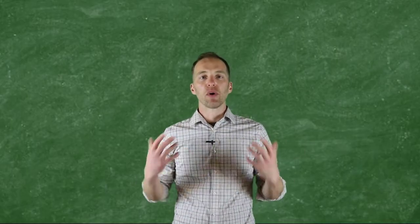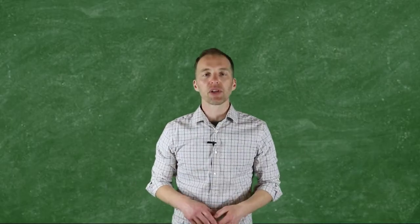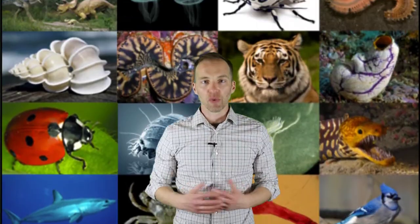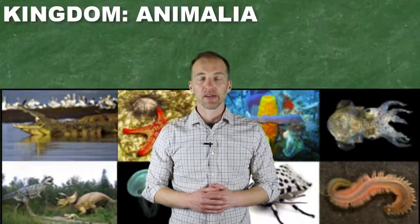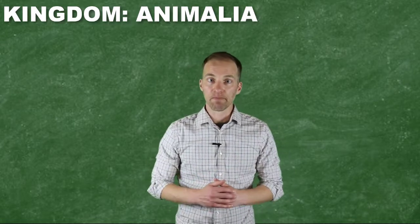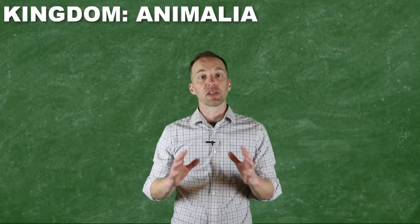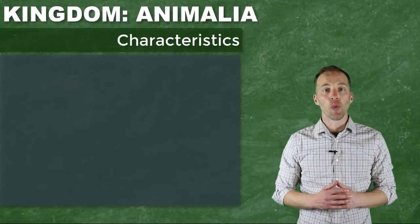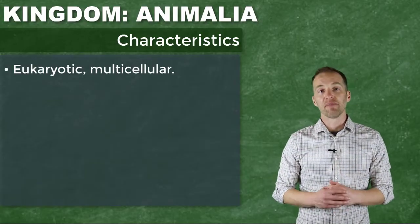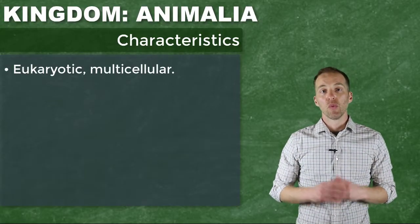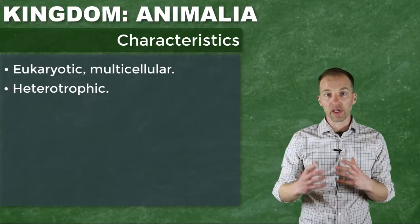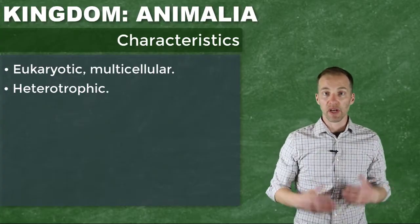When we talk about the organisms of the animal kingdom, we are talking about some of the most advanced, complex, and diverse organisms that we have classified. So next time you're hanging out with your fungi or plant friends, you can brag a little bit. Now in terms of the characteristics of the organisms in this kingdom, obviously being in the domain Eukarya, they are eukaryotic. Within their cells, they have membrane-enclosed organelles. We know that they are heterotrophic, meaning that they rely on other organisms for their nutrients, for their source of energy, for their food.